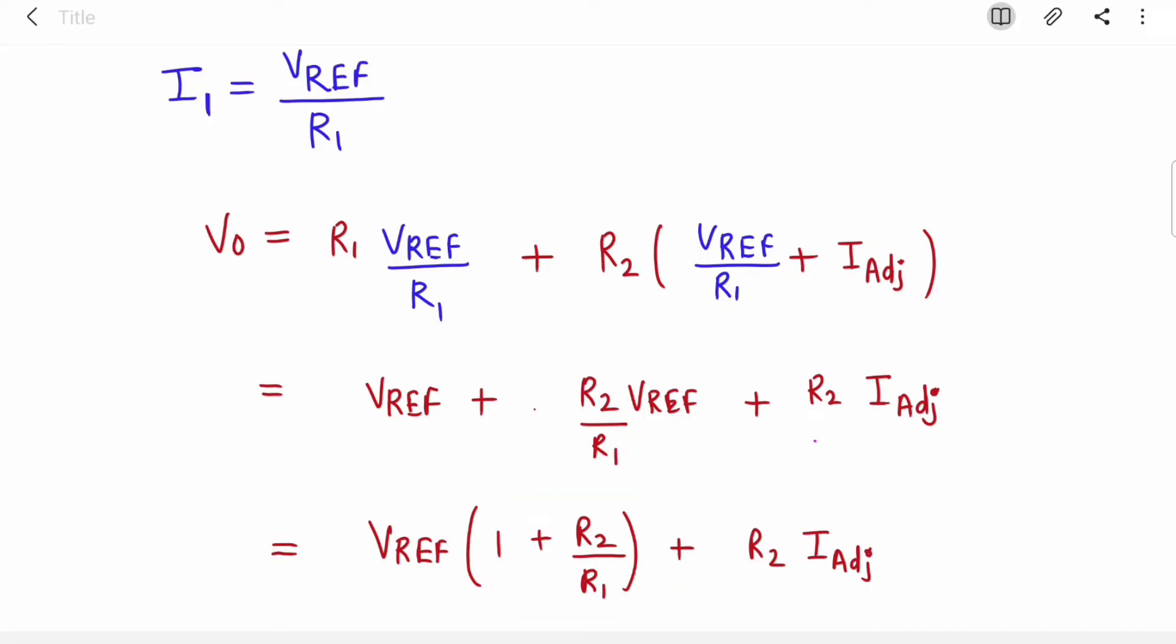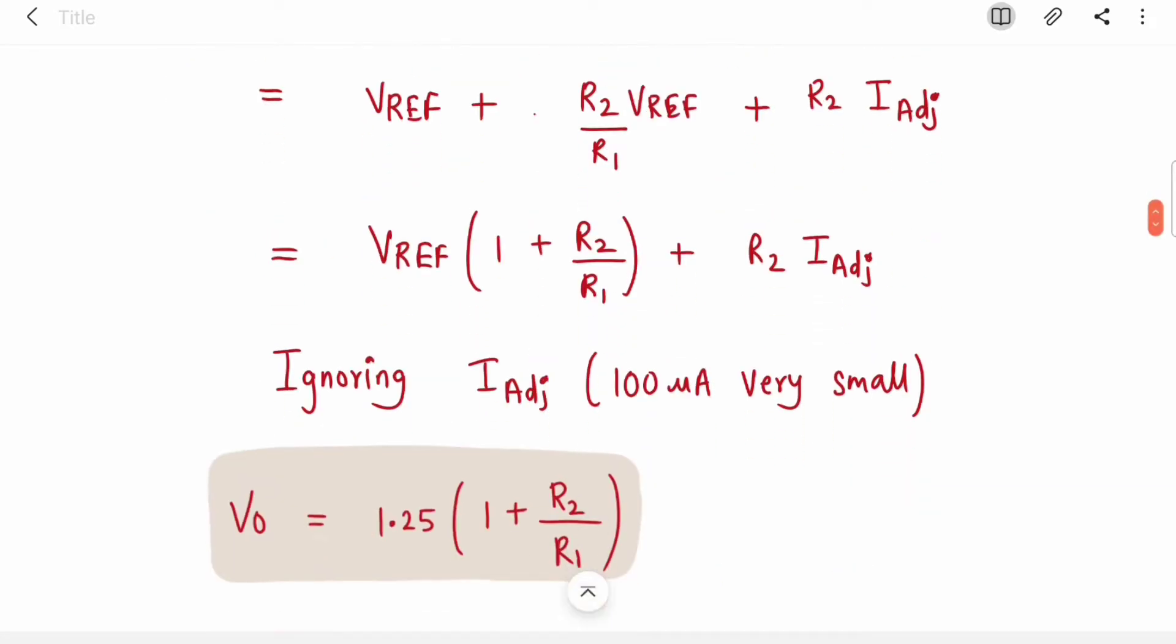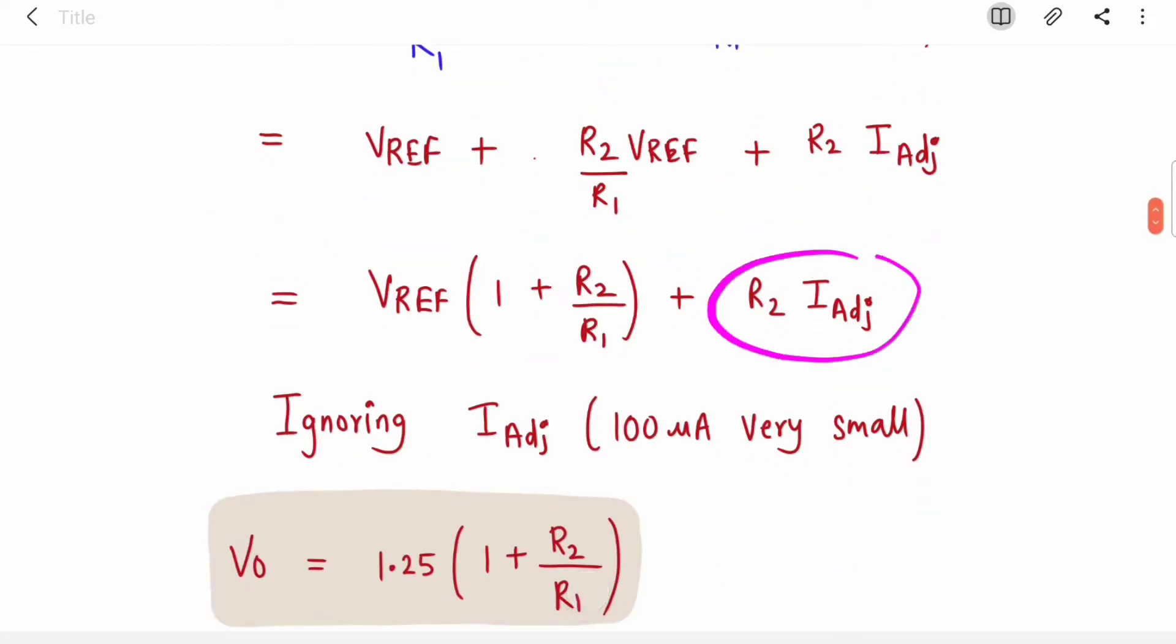Now I am ignoring the I_adj term because I_adj is very small, 100 microamperes for LM317. So the output equation has only one term now.